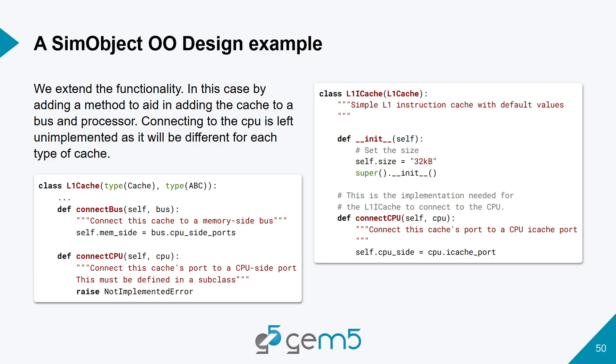Connecting the CPU is left unimplemented in L1Cache. We define how we're connected to the bus — connecting port mem_side to the port cpu_side_ports in the SimObject bus. Connect to CPU isn't implemented, but that doesn't really matter because L1Cache is an abstract base class anyway. L1iCache is then a subclass of L1Cache. It has its own constructor which calls the super class constructor, and finally it implements the needed connectCPU method to actually connect to the CPU.